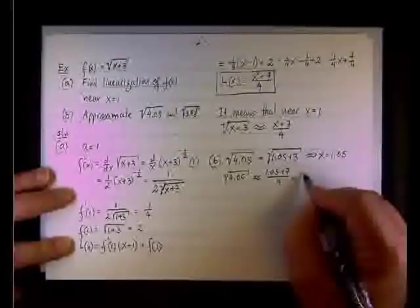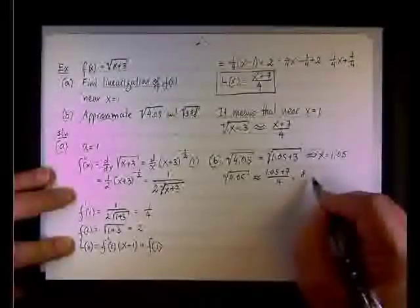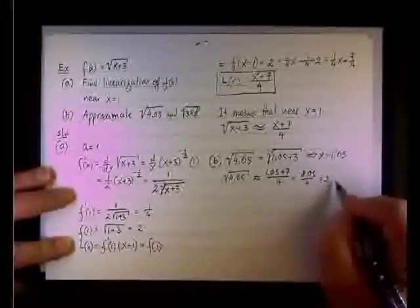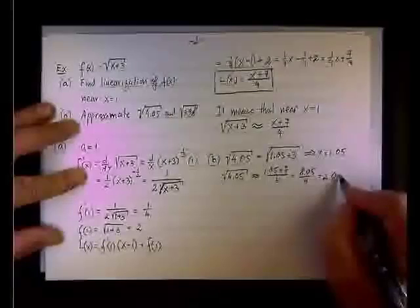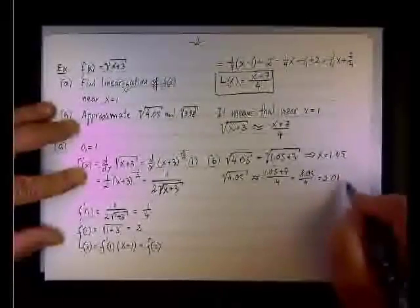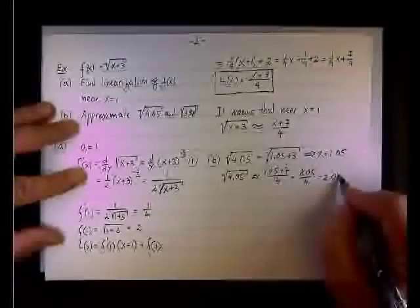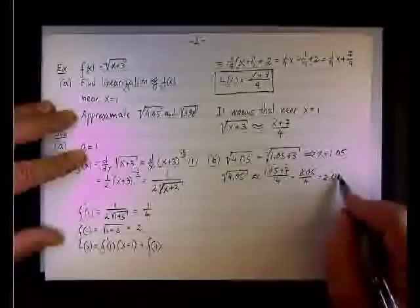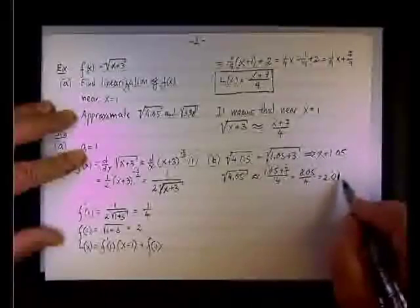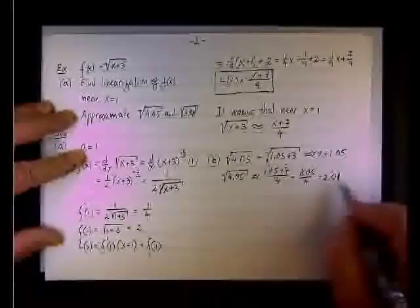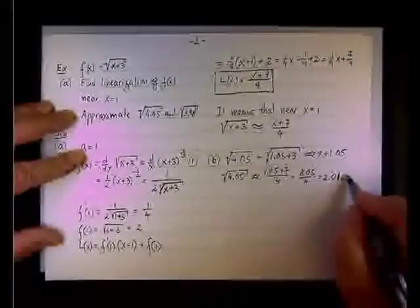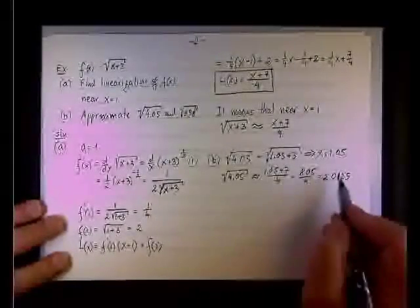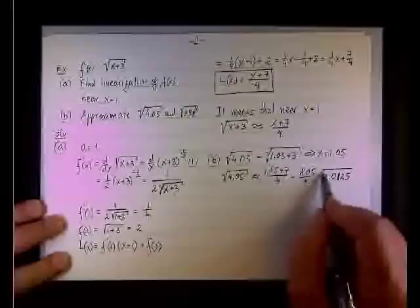And I don't need a calculator for that, and hopefully you don't need that either, because 8 divided by 4 is 2, and then you have 0.05 divided by 4 is 1, and a remainder of 2, so 20... What do we have here? 2.0... So I'm blabbing, but this is the result.